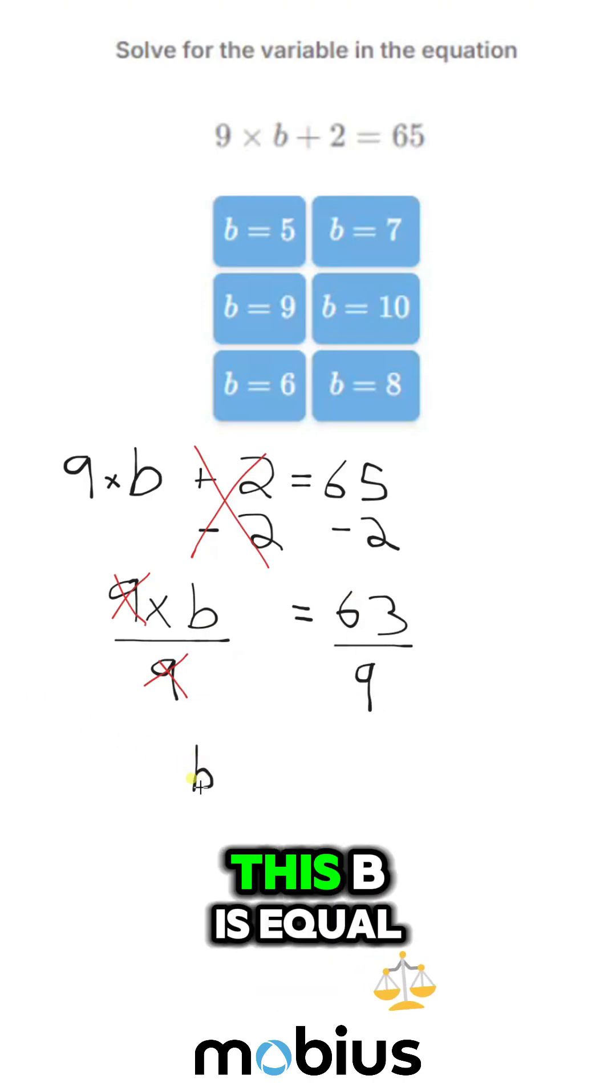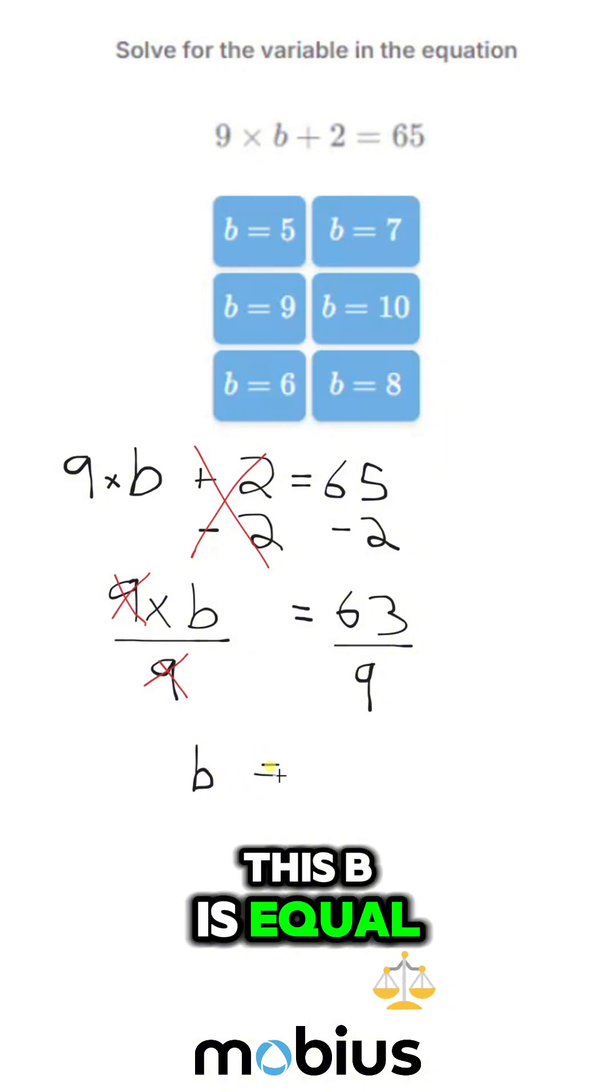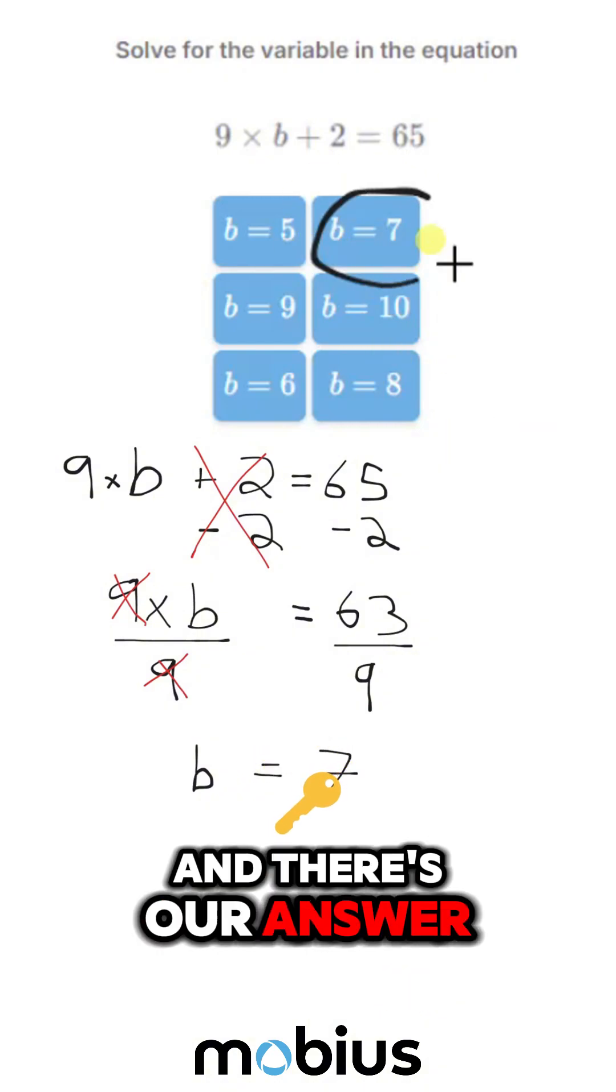So if I rewrite this, b is equal to 63 divided by 9, which is 7. And there's our answer.